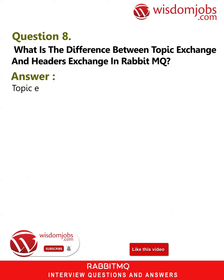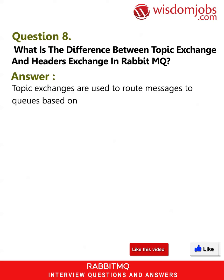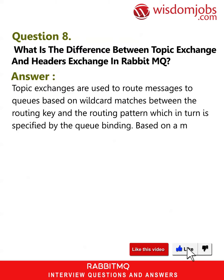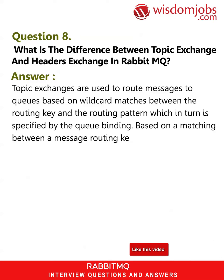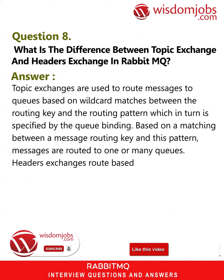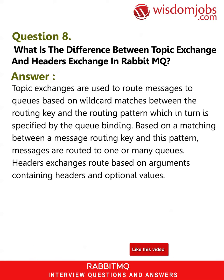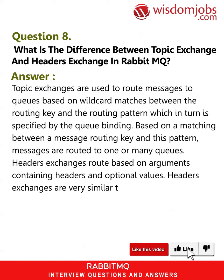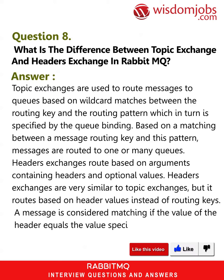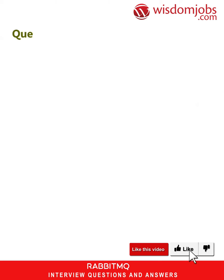Question 8: What is the difference between topic exchange and headers exchange in RabbitMQ? Answer: Topic exchanges are used to route messages to queues based on wildcard matches between the routing key and the routing pattern, which is specified by the queue binding. Based on a match between a message routing key and the pattern, messages are routed to one or many queues. Headers exchanges route based on arguments containing headers and optional values — very similar to topic exchanges but routing is based on header values instead of routing keys. A message is considered matching if the value of the header equals the value specified upon binding.